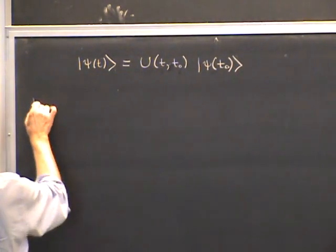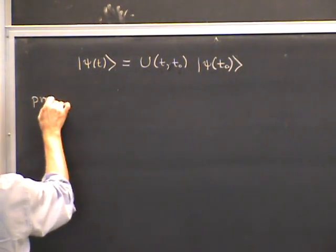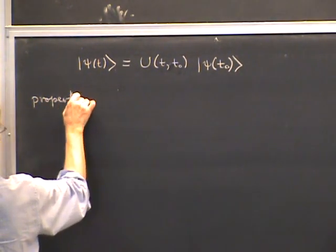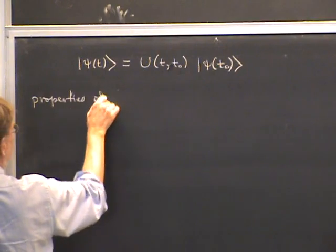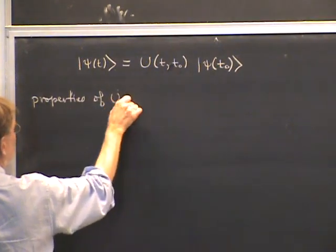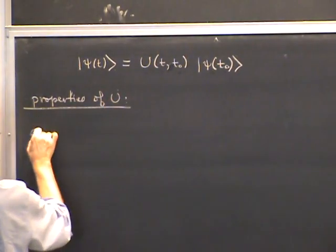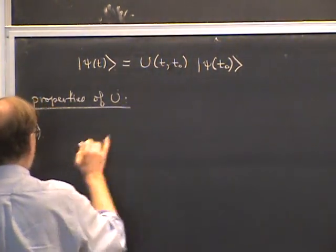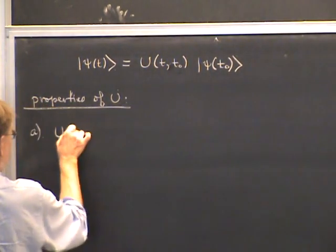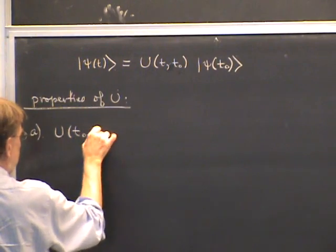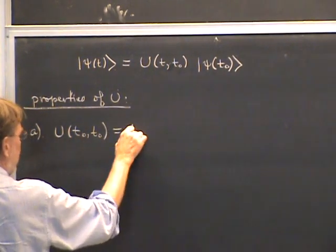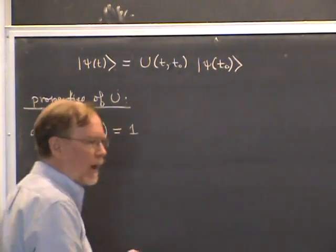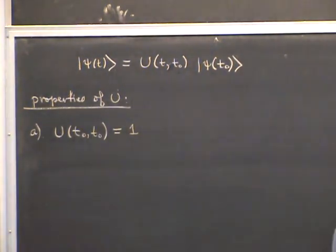About this operator U, it has certain reasonable properties. There are three I want to mention. The first is essentially an initial condition: if the two times are equal, so U(t0, t0), then U must equal the identity operator, because if there's no time evolution, nothing happens to the state.